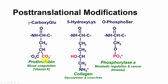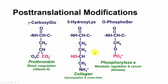Post-translational modifications can alter amino acid chemistry. Gamma-carboxyglutamic acid is glutamic acid with an extra carboxyl group added — very important for the structure of prothrombin and vital for blood coagulation; vitamin K is required for this modification. 5-Hydroxylysine is a lysine side chain with a hydroxyl group; it's found in collagen and serves as the site where carbohydrate gets attached — an important post-translational modification of collagen.